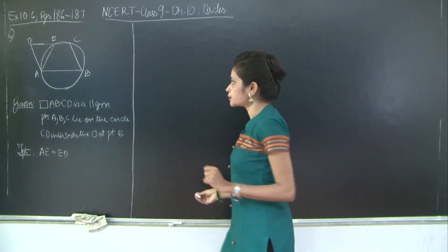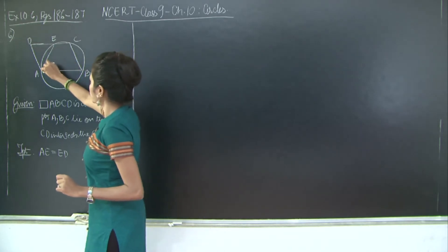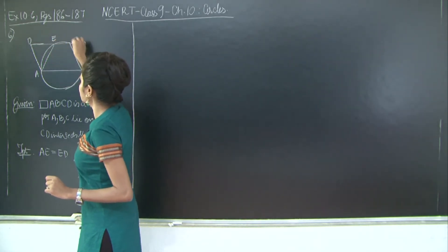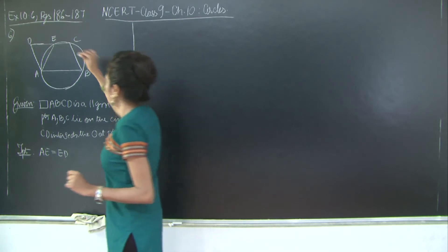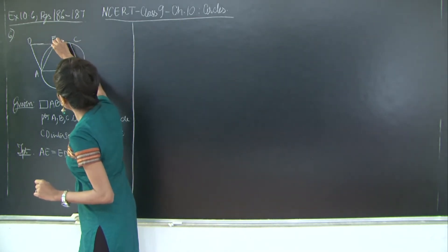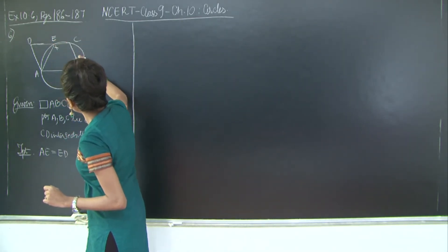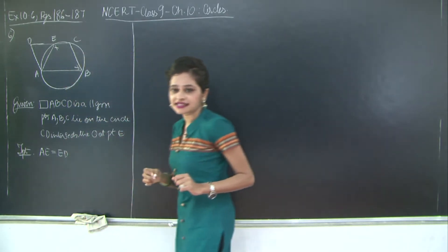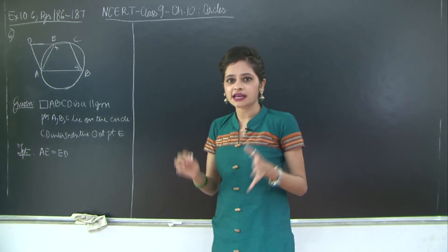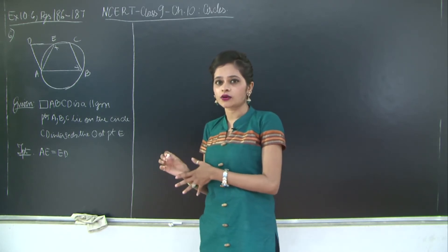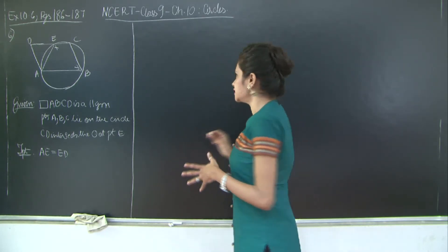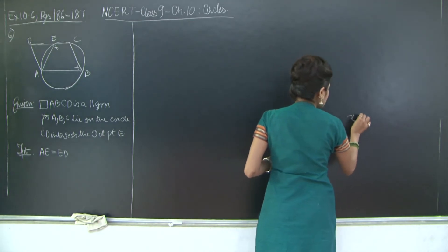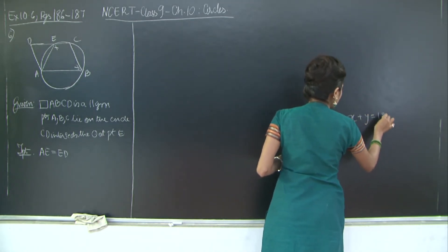First of all, if you notice like I told you, ABCE is a cyclic quadrilateral. Correct? Therefore this angle, let us say x, is equal to this angle plus this angle, x plus y is 180 degrees. Because the sum of pair of opposite angles of cyclic quadrilateral is 180 degrees. So I will say x plus y is 180 degrees.